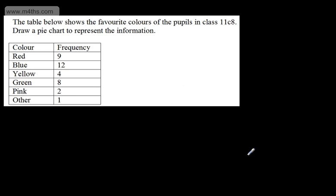In this video, we're going to look at drawing and interpreting pie charts. A pie chart is a graphical representation of the proportion of each of the categories within our data set. It gives us the relative size — the percentage or fraction that each category contributes to the total. We won't necessarily know the frequency; we will just see how much each one contributes.